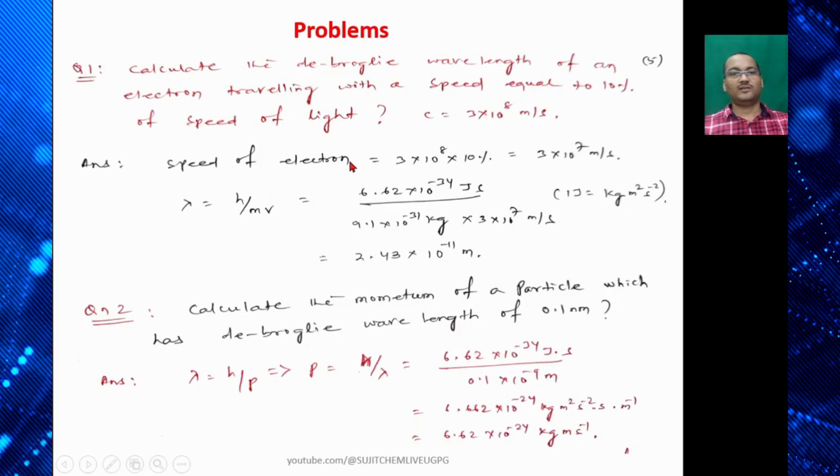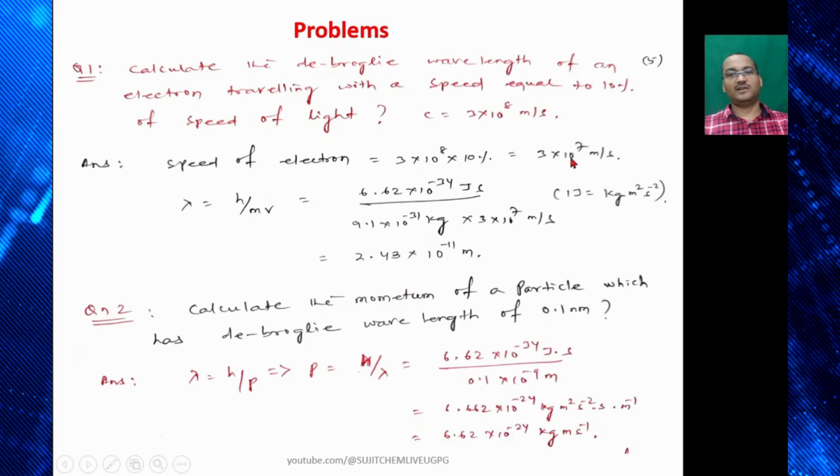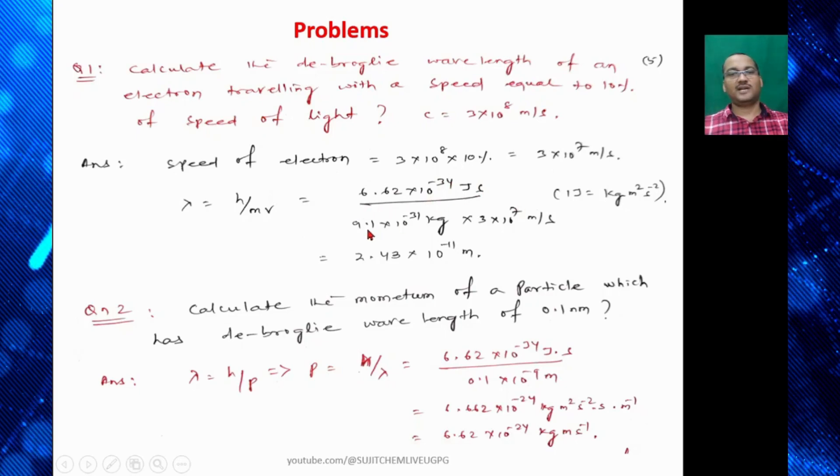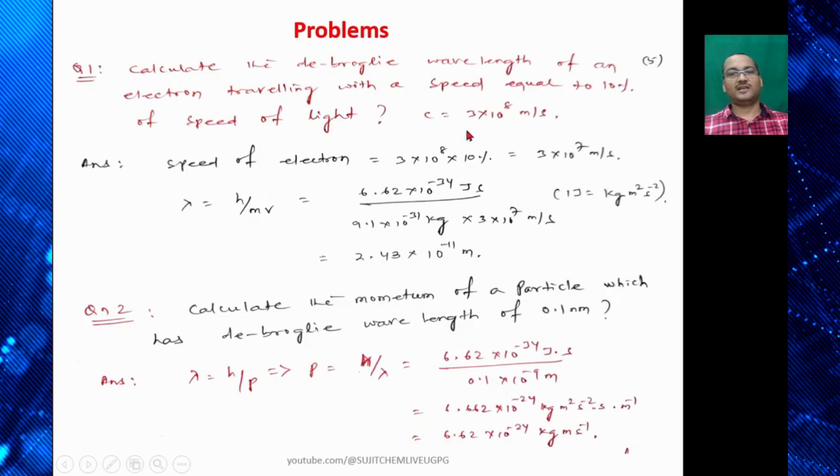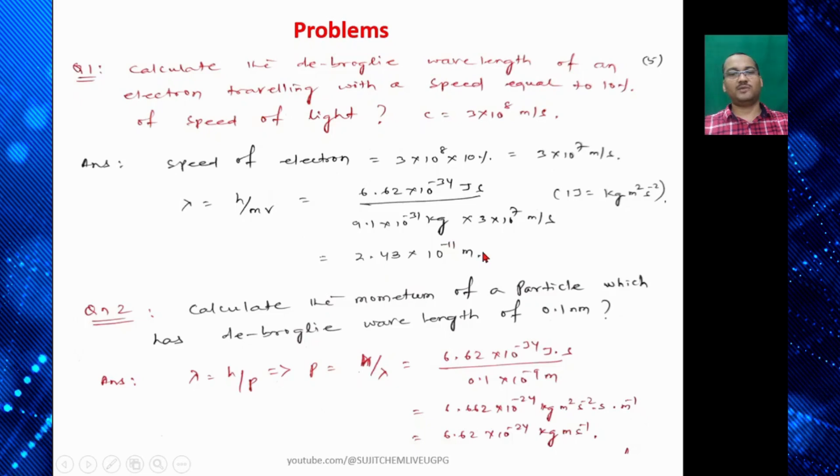The speed of electron will be 10% of light. So that is 3×10⁸ × 10% that is 3×10⁷ m/s. And we know λ = h/mv. So h we know already 6.62×10⁻³⁴ joule second, divided by mass of electron that is 9.1×10⁻³¹ kg, and velocity here is 3×10⁷ m/s. So which is upon solving found to be 2.43×10⁻¹¹ meter.